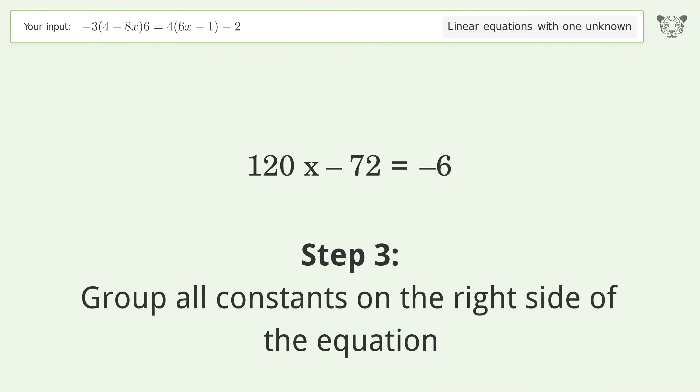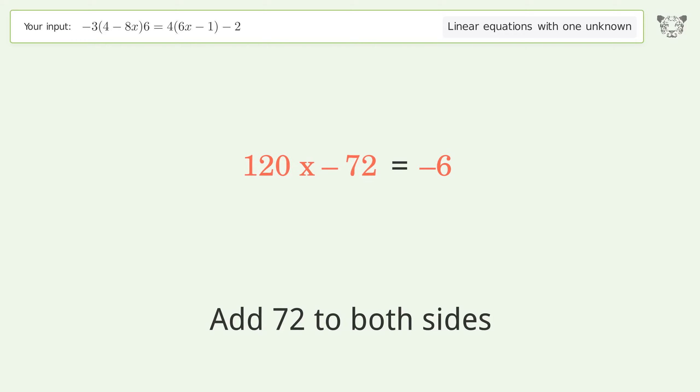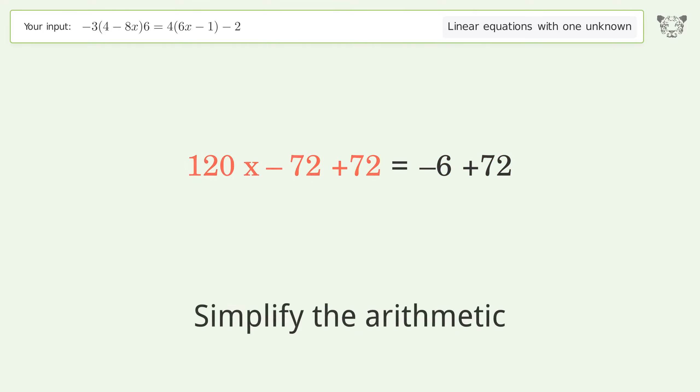Group all constants on the right side of the equation. Add 72 to both sides. Simplify the arithmetic.